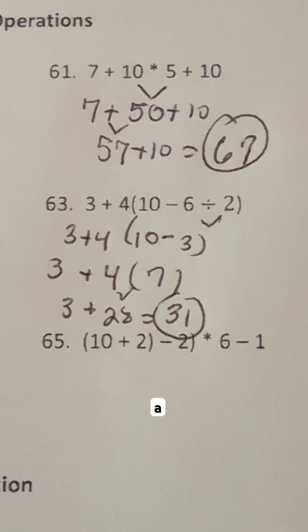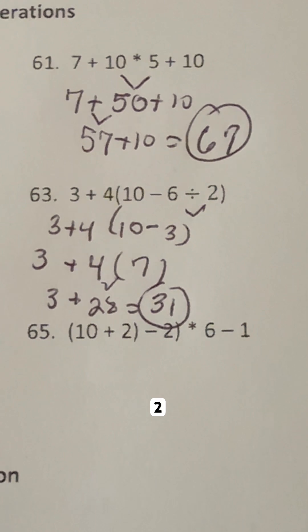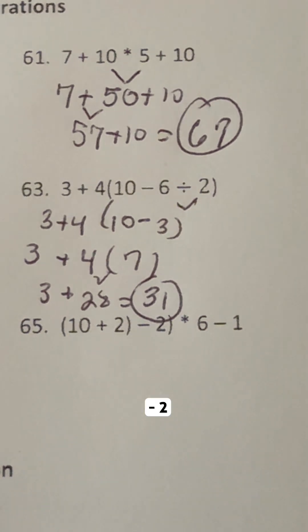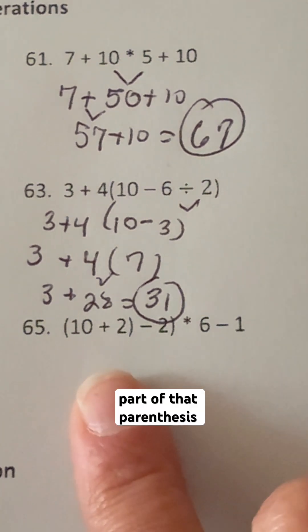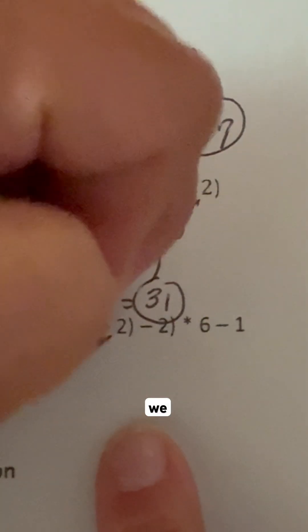And then our last one, we have a 10 plus 2, and then minus 2 times 6 minus 1. So the first thing we want to do is focus on that set of parentheses. We're going to start on the inside part of that parentheses first. 10 plus 2, we get 12.